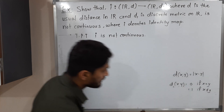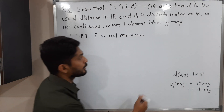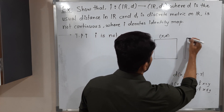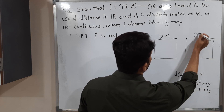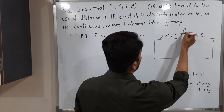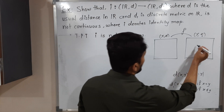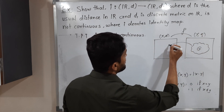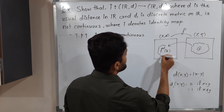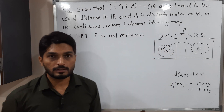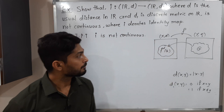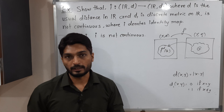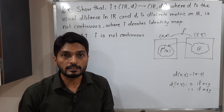Let us recall one definition of continuous function — there are some equivalent definitions and this is one of them. Suppose we have domain (X, d) and codomain (Y, ρ). We have a function f from X to Y. If for any open set G in the codomain, its inverse image f⁻¹(G) is always open in the domain, then we say the function is continuous.